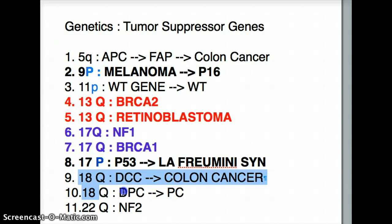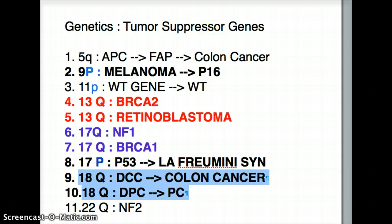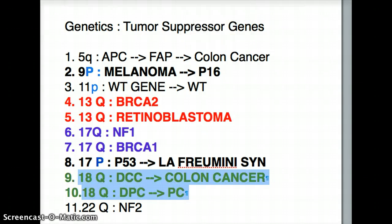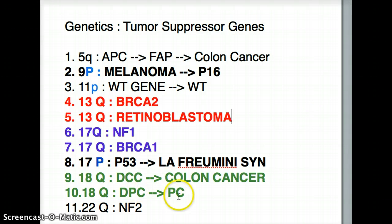Next we have 18Q. With 18Q we are talking about DCC, which causes colon cancer, and DPC, which causes pancreatic cancer. These are both tumor suppressor genes associated with 18Q.